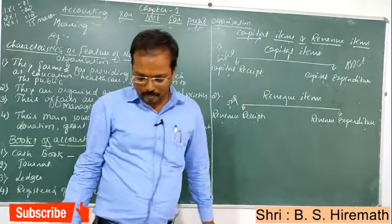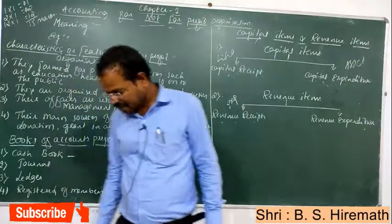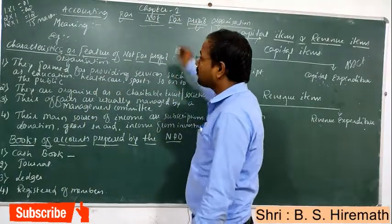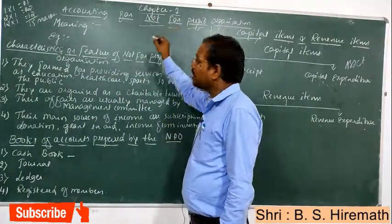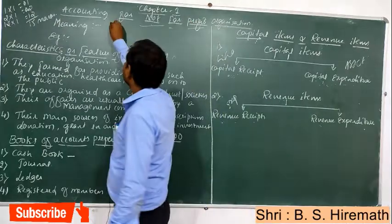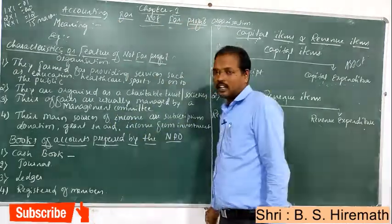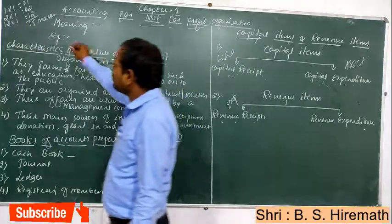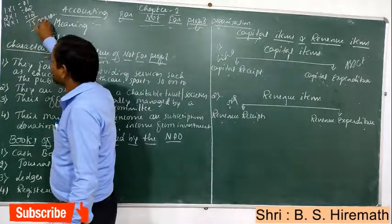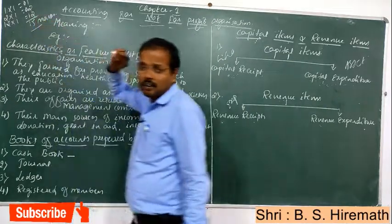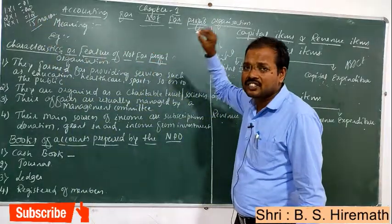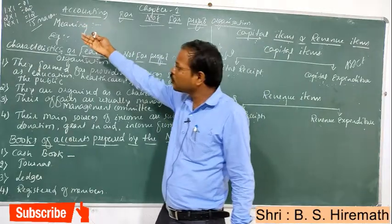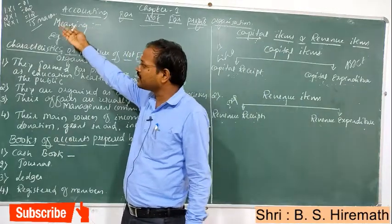Good afternoon, my dear children. Now we will discuss about the first chapter: Accounting for Not-for-Profit Organizations. In this chapter, total 15 marks questions arise. One mark: one theory fixed. Two marks: one theory fixed.